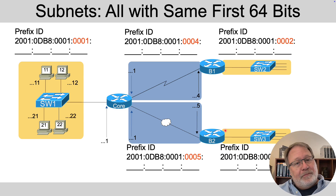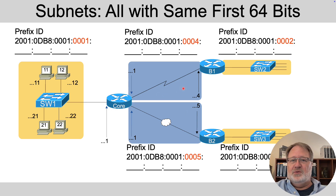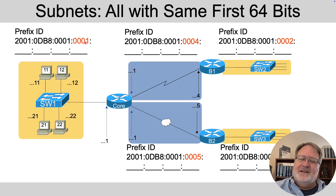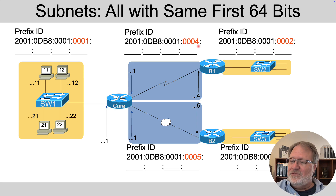Subnetting happens in IPv6 — most people call them subnets, but the formal term is prefix ID. A planning chart might show five subnets or five prefixes with prefix IDs. Often the prefix ID is the first half of the IPv6 address structure — the first 64 bits or first 16 hex digits. So you'd see 2001:0DB8:0001:0001, and then the last four hex digits distinguish each prefix: 0002, 0003, 0004, and 0005, making each prefix ID unique.